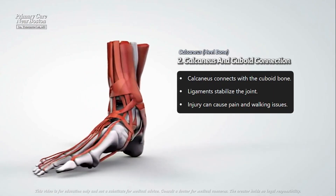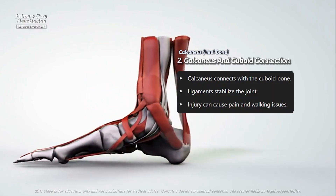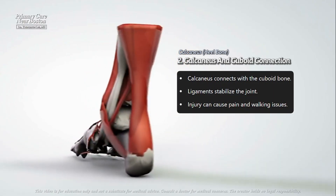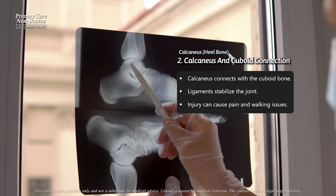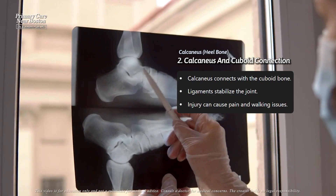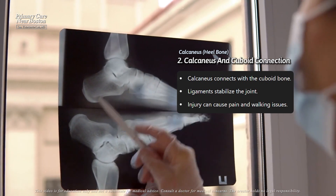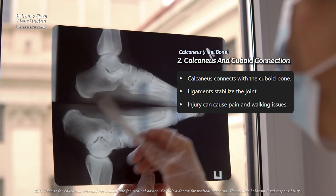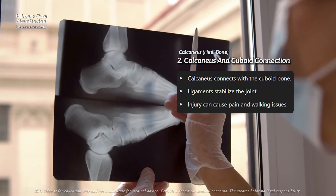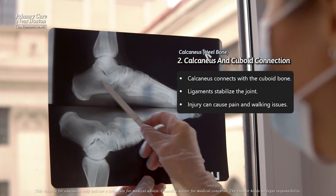The calcaneus, or heel bone, is the largest bone in the foot. It's not just a simple bone — it has many surfaces where it connects with other bones and ligaments.